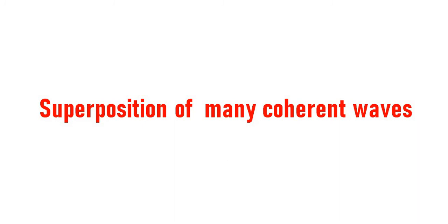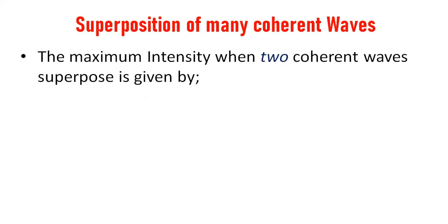Superposition of many coherent waves. We already discussed that when two coherent waves superpose, the maximum intensity is Imax = 4i0, and the minimum intensity Imin = 0. For incoherent waves the intensity is I = 2i0, but for two coherent waves superposing, the maximum intensity Imax is 4i0 and Imin is 0.